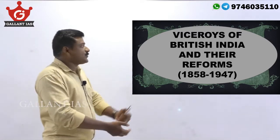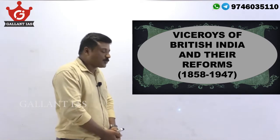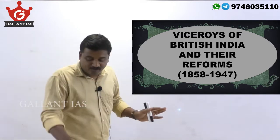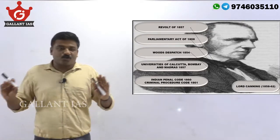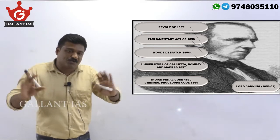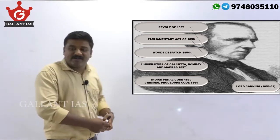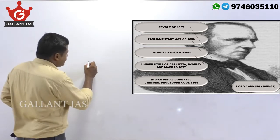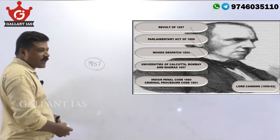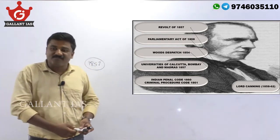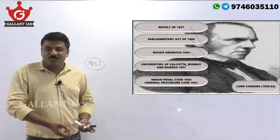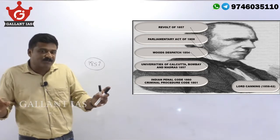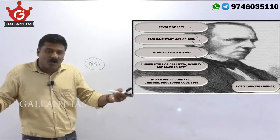Viceroys of British India and the reforms from 1858 to 1947, till the achievement of India's independence. Lord Canning, the first Viceroy of India, was the last governor general. The major events during his tenure include the Revolt of 1857, whose causes, character, consequences, implications, and both Indian and British responses we have already covered.